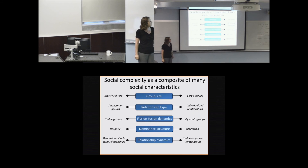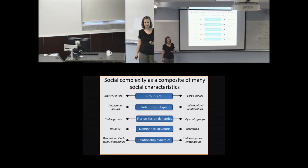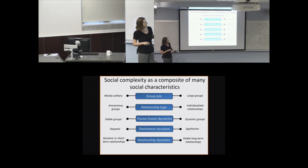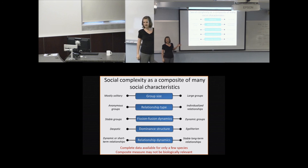Another approach is using several features of social structures—group size, relationship type, fission-fusion dynamics, dominance hierarchy structure, and relationship dynamics—and compressing this multidimensional information into a single measure of social complexity using multivariate statistics or an information-theoretic approach. This might be good because the measure would be based on a wide variety of social aspects, but complete data is available for only a few species, and once you compress all these measures together, the composite measure might not actually be biologically relevant.